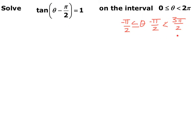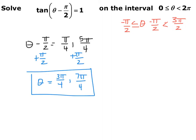Tangent is already isolated, so we solve: tangent equals 1 means y over x, so x and y coordinates are exactly the same sign — that's quadrants 1 and 3 at the over-4's. So between negative pi/2 and 3pi/2, we get pi/4 (first quadrant) and 5pi/4 (third quadrant), both in the correct interval. But those equal theta minus pi/2, so we add pi/2 to both sides. Pi/4 plus pi/2 gives 3pi/4, and 5pi/4 plus pi/2 gives 7pi/4. These are in our original interval of 0 to 2 pi.